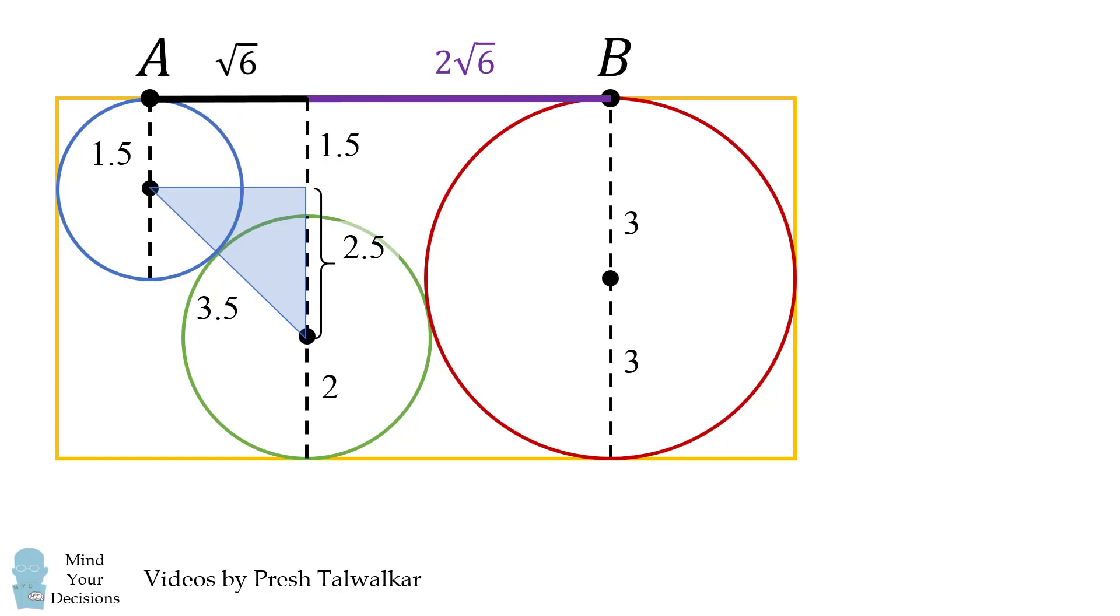So this will be the other horizontal distance that we need to know. So now to figure out the length of AB, we simply add the square root of 6 and 2 square root of 6, and we get 3 square root of 6. And that's approximately 7.35 centimeters, and that's our answer.